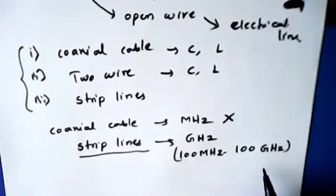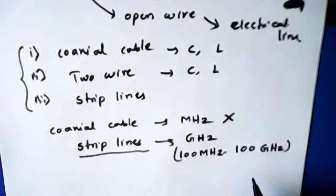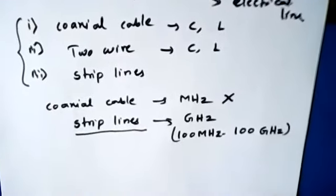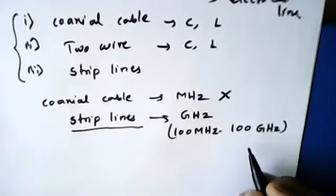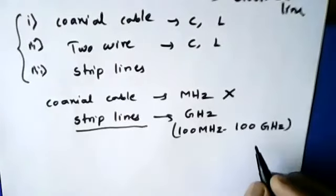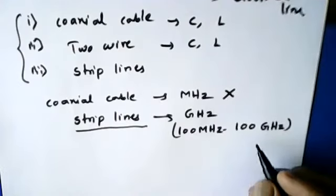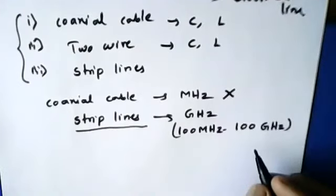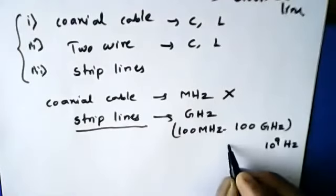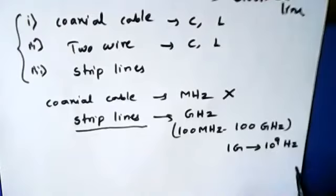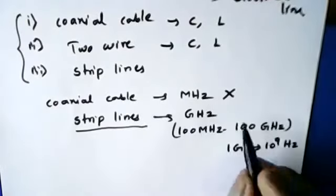You should know that giga means 10 to the power of 9. So one gigahertz is 10^9 Hz. Strip lines work in the microwave frequency range of 100 megahertz to 100 gigahertz. Please make a note of this.